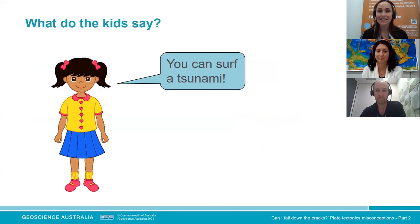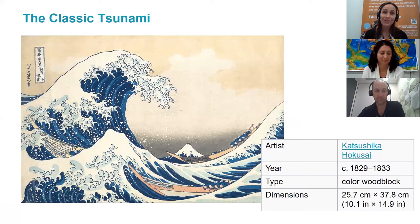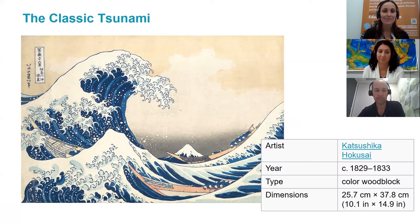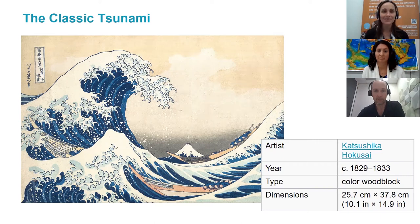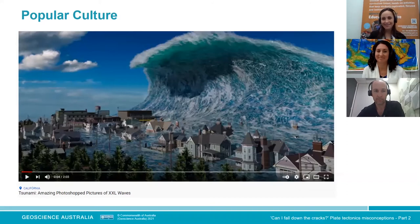Our final misconception is that you can surf a tsunami. The classic tsunami image is a woodblock print by a Japanese artist from the 1800s — but there is nothing from that time or place that identified this as a tsunami wave. This was a modern Western interpretation; scholars think it is more likely to show a rogue wave. However, this cresting shape has continued into popular culture and disaster movies, which is probably why kids think it would be a great wave to surf.